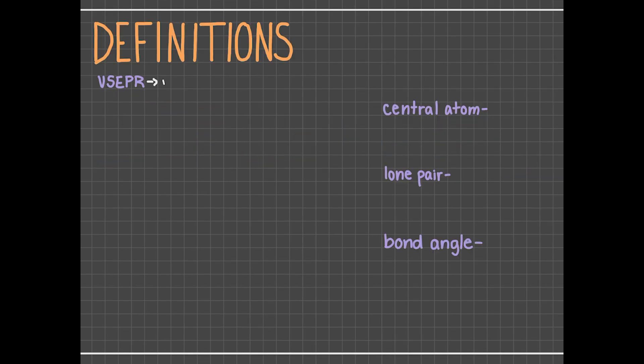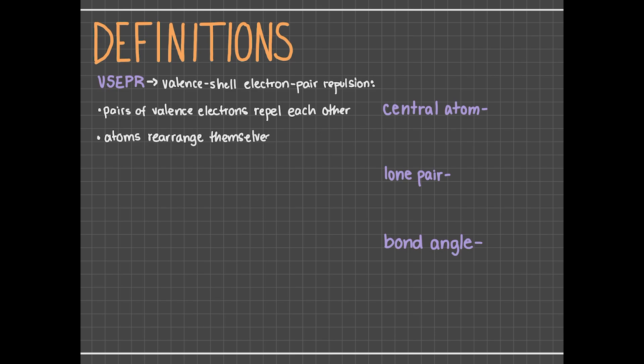The premise of VSEPR theory is really in its name. VSEPR stands for valence shell electron pair repulsion. This just means that pairs of valence electrons repel each other. In order to minimize this repulsion, atoms will rearrange themselves so they are as far away as possible from other atoms. We can use this theory to predict the shape of a molecule after the atoms rearrange themselves.